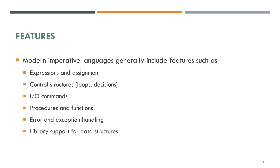Modern imperative languages generally include features such as expressions and assignment, control structures, loops and decisions, input-output commands, procedures and functions, error and exception handling, and library support for data structures.